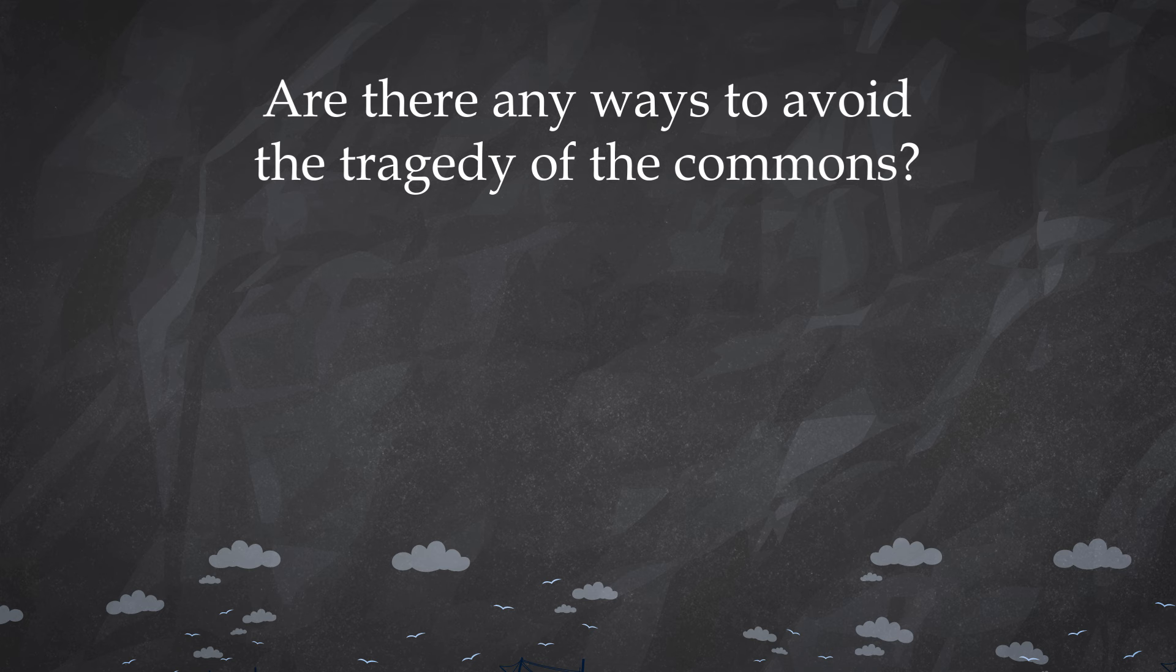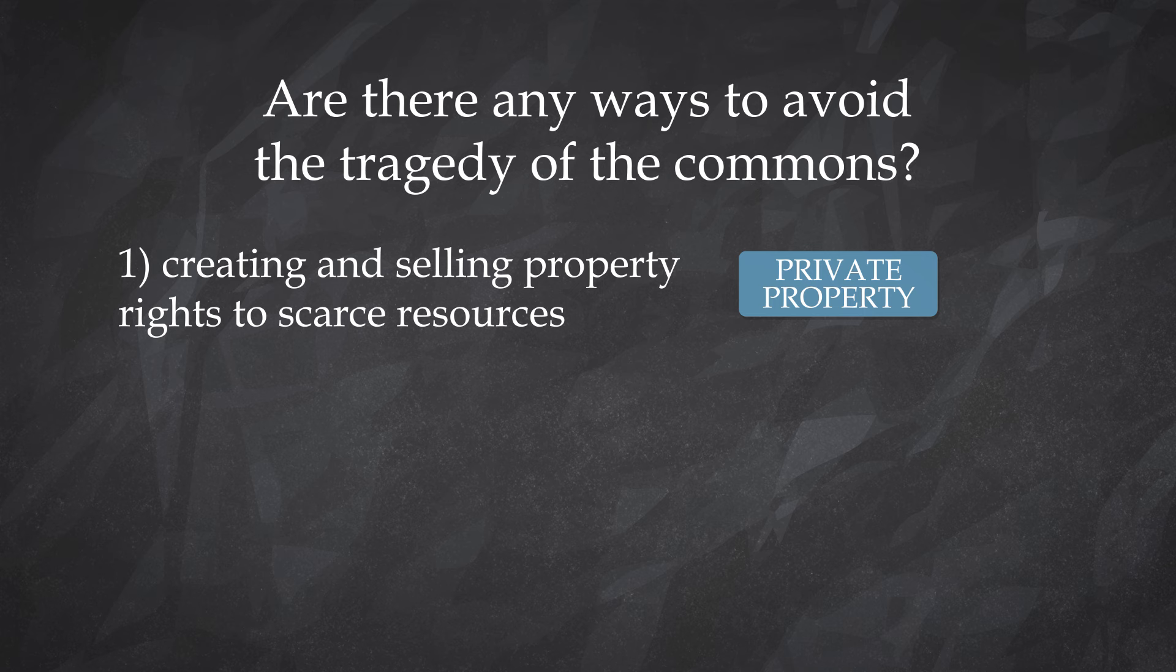Are there any ways to avoid the tragedy of the commons? Yes, but there is no single universal cure that will work in all conditions. We can, instead, denote three general groups of solutions. Hardin suggested two of them: 1. Creating and selling property rights to scarce resources, which allows for a change in incentives and for exclusion of others from the use of said resources. And 2. Top-down regulations of the right to enter areas endowed with such resources.